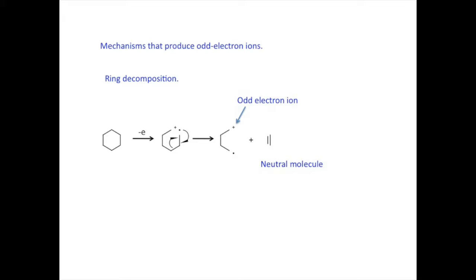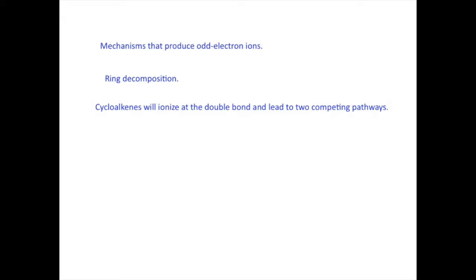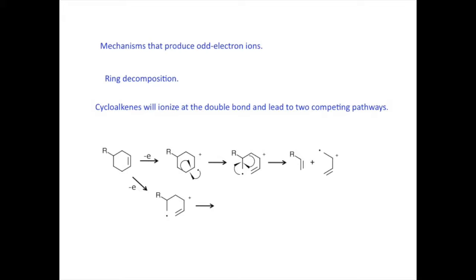Something similar happens with cyclohexene and aromatic rings. Ring opening in these cases leads to two competing pathways. The ionization step removes an electron from a double bond and a radical initiates the alpha cleavage. The product still has the same mass as the original molecule, but if we let the radical form a new bond, it will break off a neutral alkene, leaving behind an odd electron ion that will show up in the spectrum. A different product can be observed if, after the ring opening process, the charge site removes a pair of electrons from a bond beta to the charge site. This time we get the neutral diene molecule and an odd electron ion as the other half.